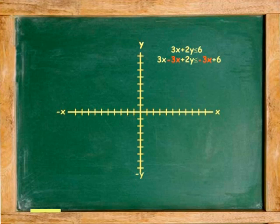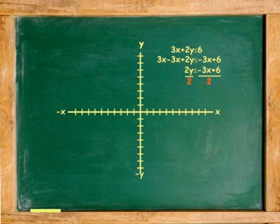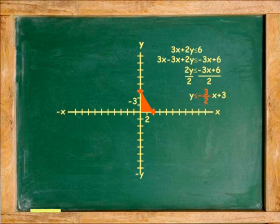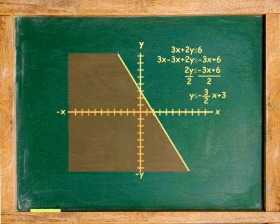Subtract 3x from both sides. Divide by 2 both sides. The y-intercept is 3 and the slope is negative 3 over 2. Because y in the inequality is less than or equal to, the area is under the line and the line is solid.